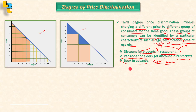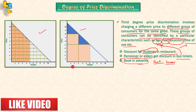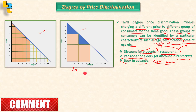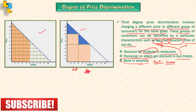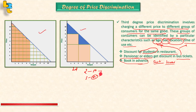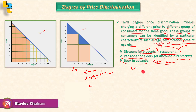We call this third degree price discrimination. Note that second degree price discrimination is based on volume — for example, 2 units for 50 rupees or 3 units for 60 rupees. Third degree price discrimination is based on consumer group characteristics. Second and third degree price discrimination exist in the real world, but first degree perfect price discrimination does not.